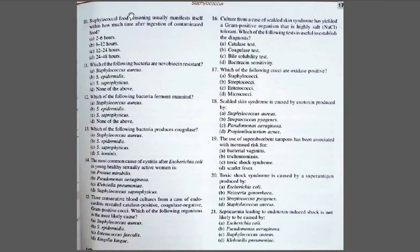Question number ten: Staphylococcal food poisoning usually manifests itself within how much time after ingestion of contaminated food? A. 2 to 6 hours; B. 6 to 12 hours; C. 12 to 24 hours; D. 24 to 48 hours. The correct option is A, 2 to 6 hours. That means if a person has consumed food contaminated with the toxin of Staphylococcus, the symptoms will be seen just within 2 to 6 hours of consumption.